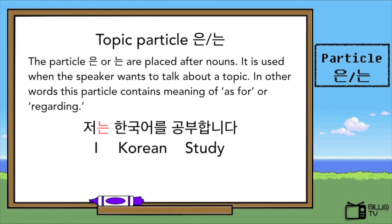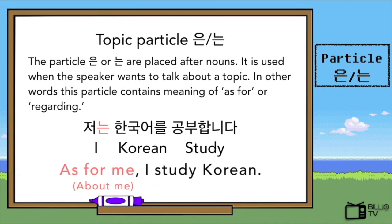When we see the sentence, we can say, oh, it means 'I study Korean' — yes, that is right. But there is more to know. As I said before, it contains a hidden meaning of 'as for' or 'regarding.' Therefore, the complete translation is: 'As for me — about me — I study Korean.' The topic of the conversation is me.